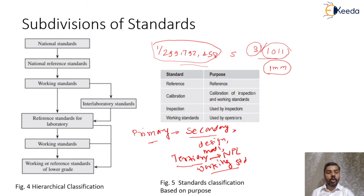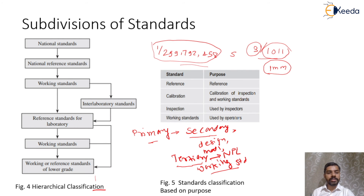The last type is working standards, which are mostly found in laboratories and workshops. Compared with the other three types, materials used for working standards are of lower grade and lower cost. These are derived from fundamental standards. Wherever there is a loss of instrumental accuracy due to subsequent comparison at each level in the hierarchical chain, working standards include both line and end standards. Working standards need to be calibrated after a certain period of time with tertiary standards.